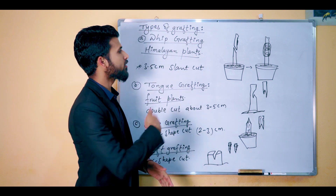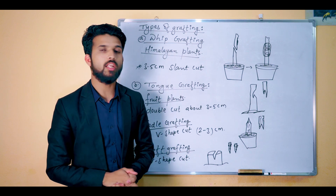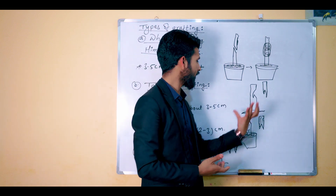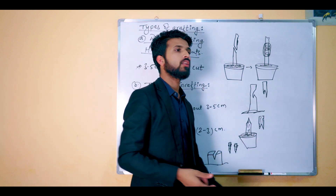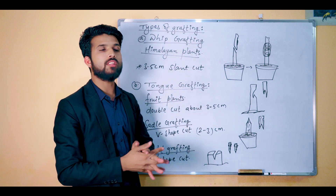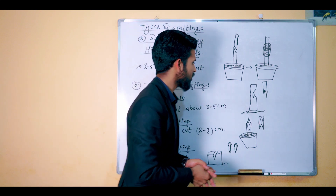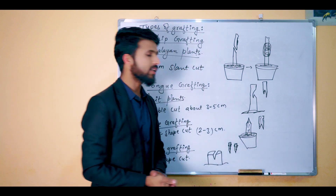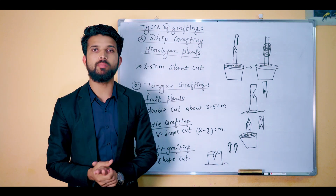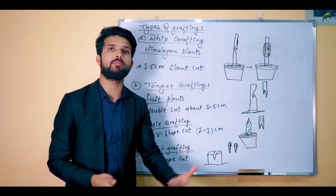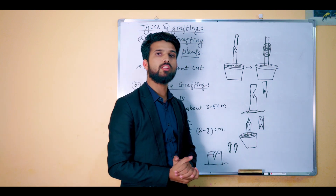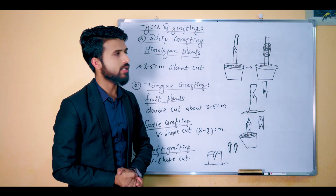We can develop rapid reproduction through grafting. If we can cut a branch, then we can add a branch and develop a new branch in the plant.